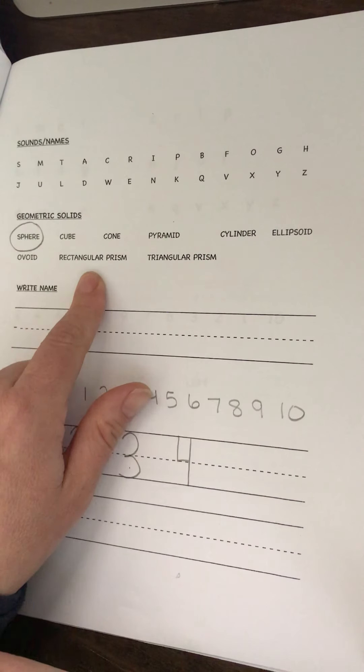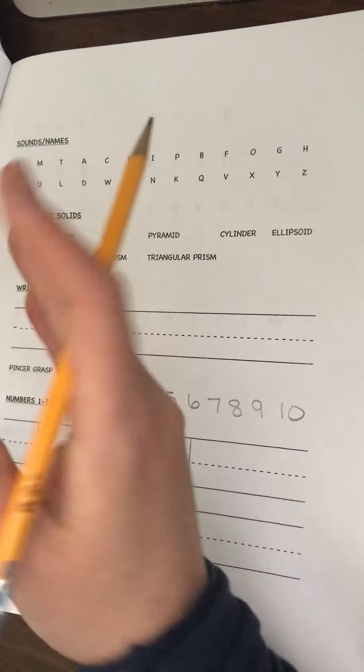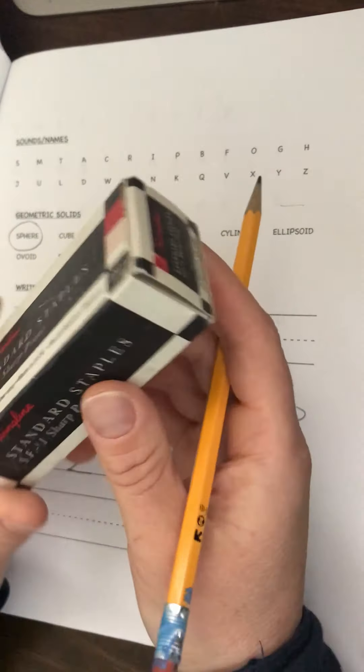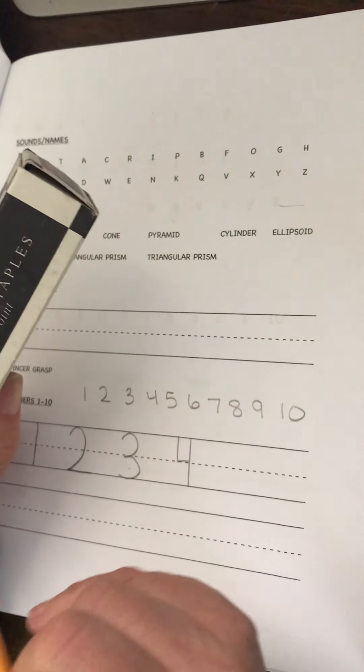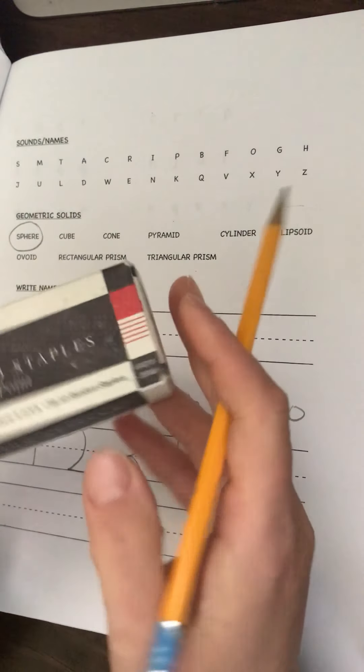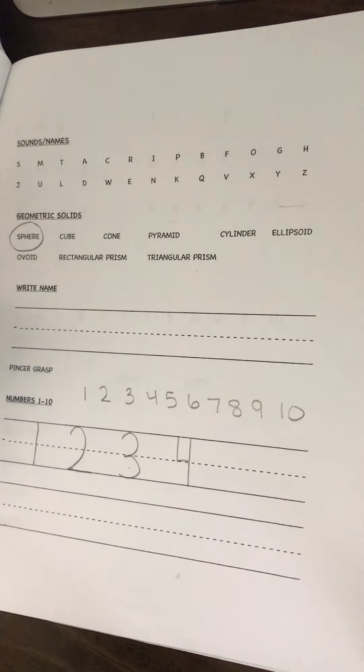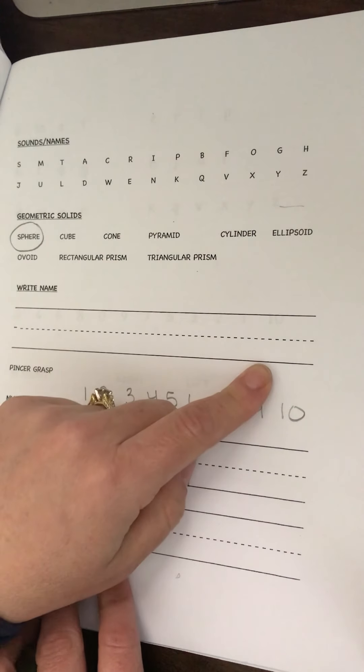Ellipsoid. These are Montessori things. Like an example of a rectangular prism is this, because see it's a rectangle and it's a rectangular prism because it's three dimensional. Seriously, don't worry about that.